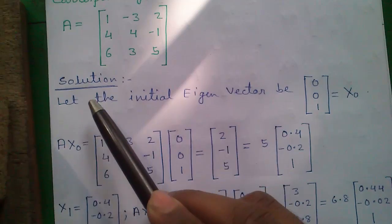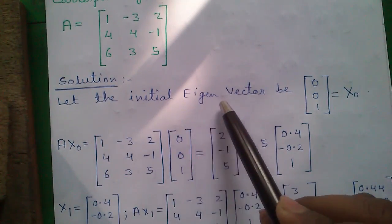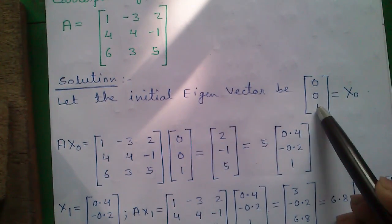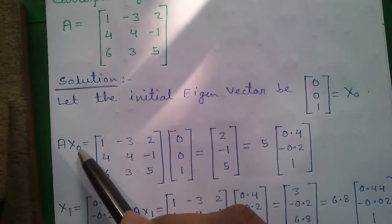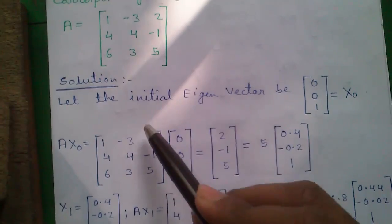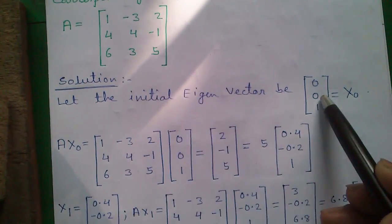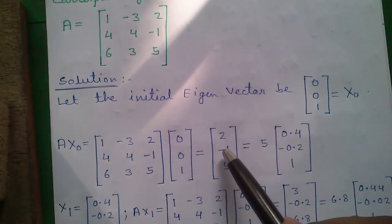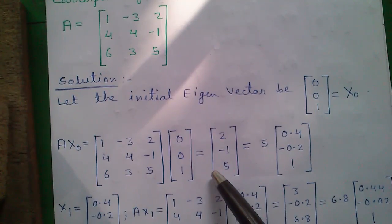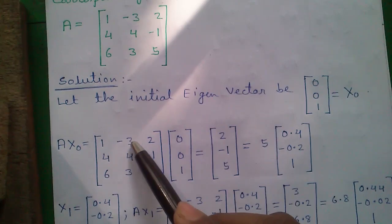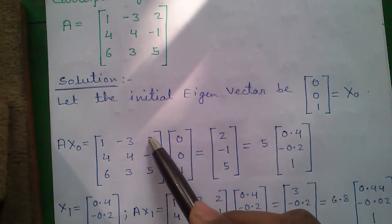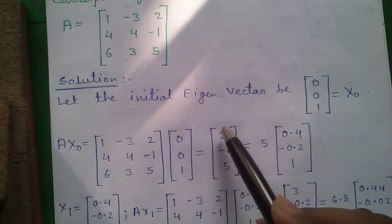Let's proceed to our solution. Let the initial eigenvector be [0, 0, 1] equals to x0. So A into x0 equals to our original matrix into x0, which equals [2, -1, 5]. The multiplication process: 1 into 0 plus -3 into 0 plus 2 into 1 equals 2.